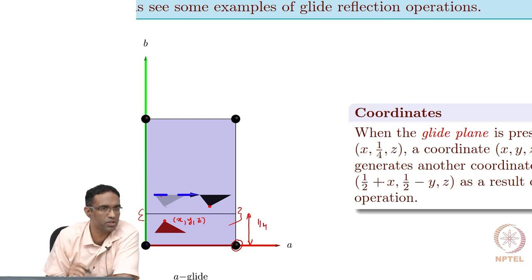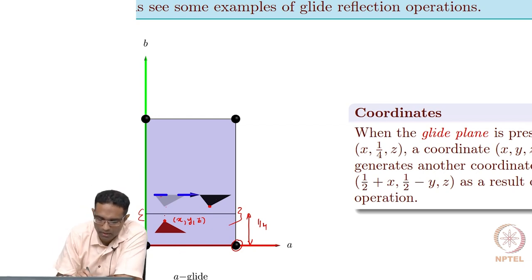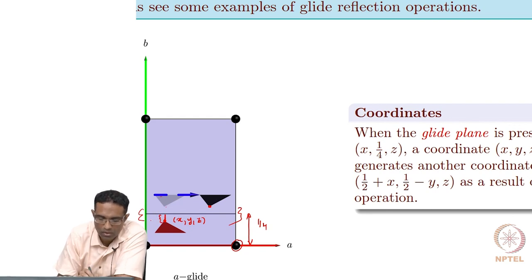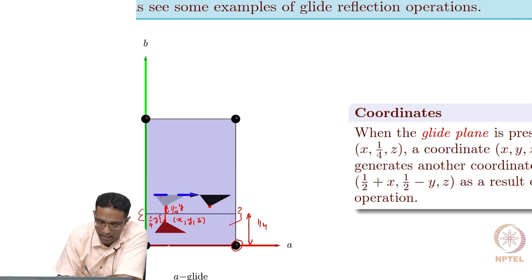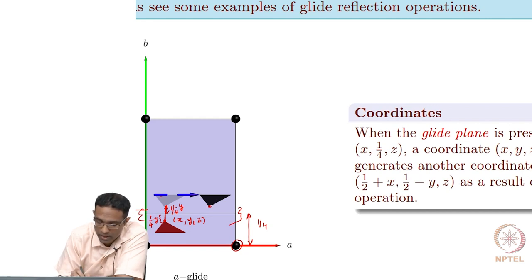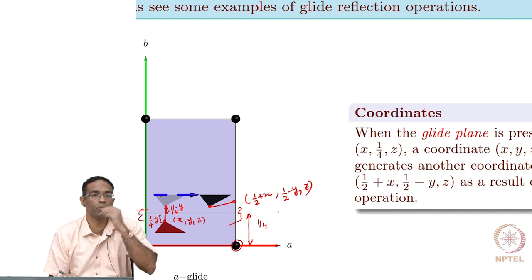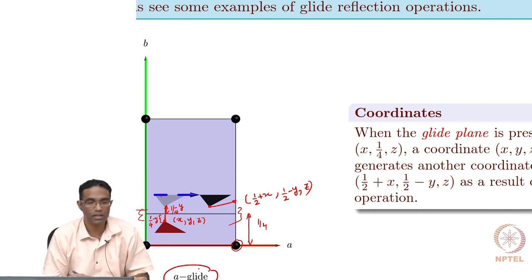So how do you get these coordinates? If the mirror is at Y = 1/4, the reflected Y coordinate becomes 1/4 minus Y, and then accounting for both sides, the actual Y coordinate becomes 1/2 minus Y. The corresponding X coordinate becomes 1/2 + X because it is moved by half the lattice translation vector. The Z component remains Z. So the new coordinates from an A glide are (1/2 + X, 1/2 − Y, Z). This is the sort of operation applied to generate Wyckoff positions for space groups with glide operations.